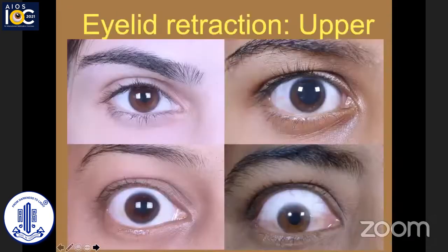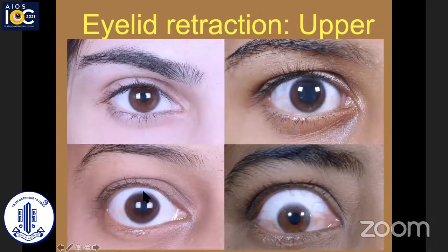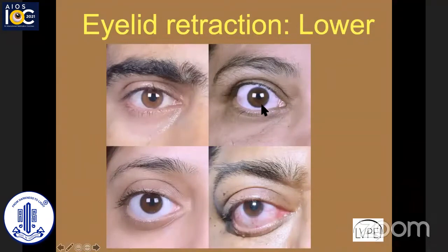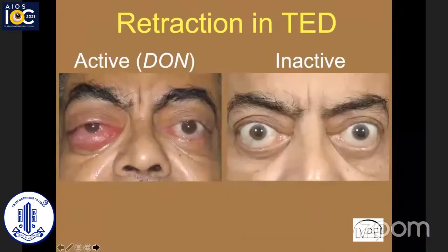Talking about retraction, if you look at upper eyelid retraction, it can be simply graded as mild where the lid is at the upper limbus, moderate where it's up to two millimeters of scleral show, and severe when it's more than two. Similarly, lower eyelid retraction can be graded as one mm, two to three mm, and more than three millimeters. Retraction in thyroid eye disease has to be dealt with slightly differently depending on whether you are looking at active versus inactive disease.